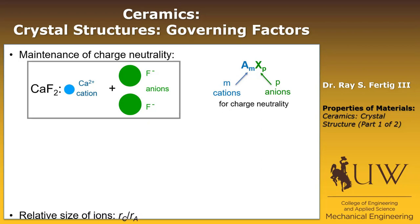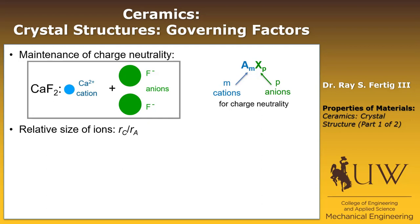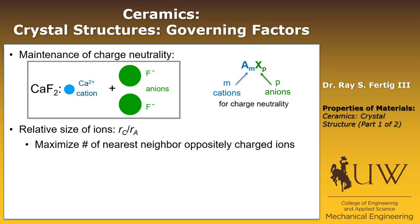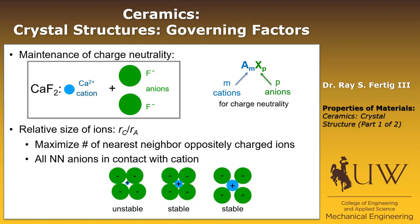The second factor is the relative size of the ions — the ratio of the cation ionic radius to the anion ionic radius. What we try to do is maximize the number of nearest-neighbor oppositely charged ions: the cation wants to be surrounded by as many anions as possible, and vice versa. Additionally, all nearest-neighbor anions must be in contact with the cation for the structure to be stable. A structure where the cation is not touching all nearest-neighbor anions is unstable.